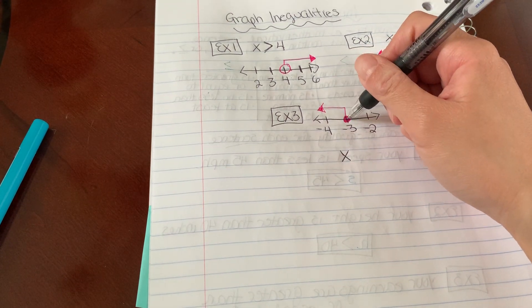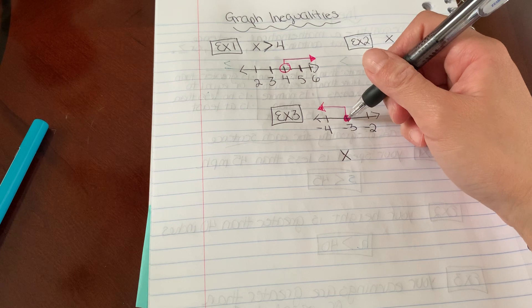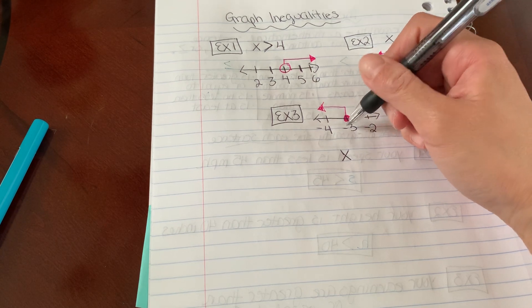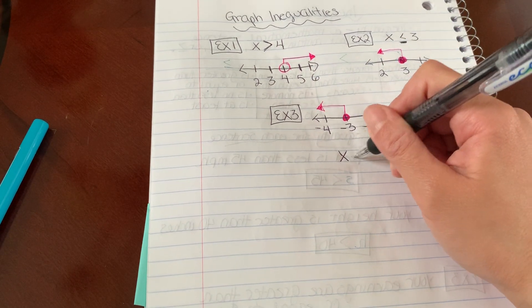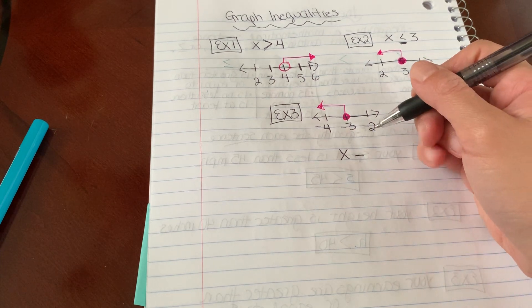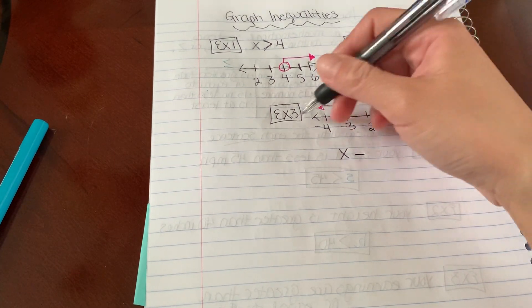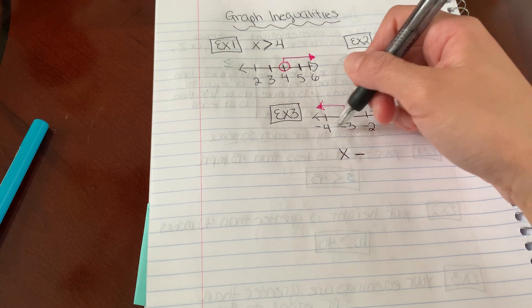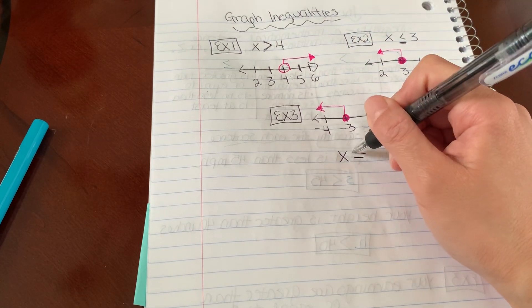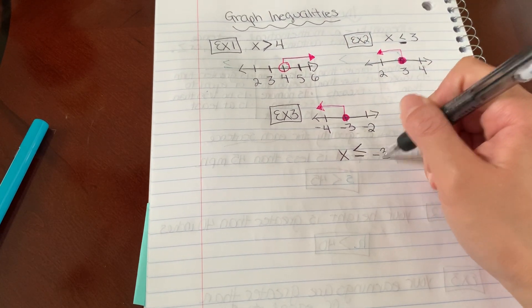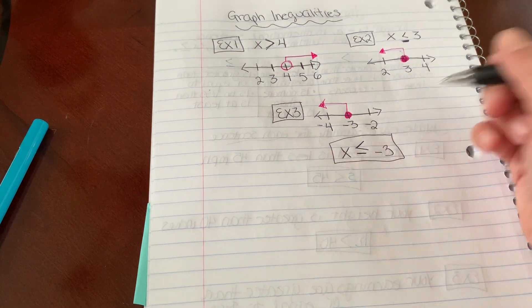Does my answer include negative 3? Yes, because it's a closed circle, so I know that I'm going to have a line under it. And this means the arrow is pointing this way, so it's going to be all the numbers less than negative 3. So less than negative 3. There you go.